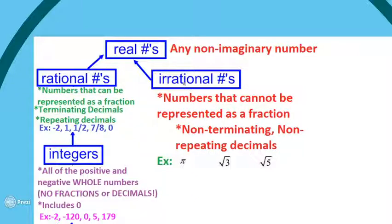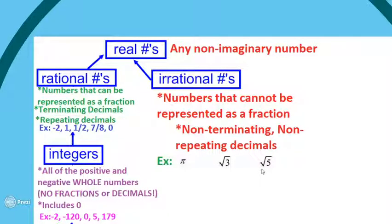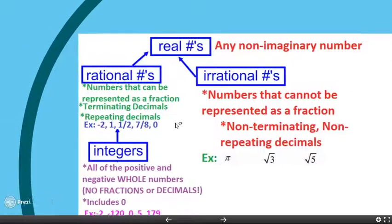Irrational numbers are simply numbers you cannot represent as a fraction. Their decimals go on forever, are non-terminating, and do not repeat. Examples include constants you know like pi — 3.14... — which keeps going forever and never repeats, as far as we know. Also, the square root of 3 and the square root of 5: any square root that is not a perfect square, when converted to a decimal, goes on forever without repeating.